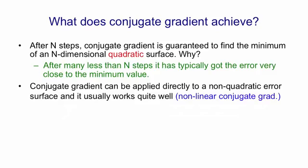You can apply conjugate gradient directly to a non-quadratic error surface, like the error surface for a multi-layer non-linear neural net. And it usually works quite well. It's essentially a batch method, but you can apply it to large mini-batches. And when you do that, you do many steps of conjugate gradient on the same large mini-batch, and then you move on to the next large mini-batch. That's called non-linear conjugate gradient.